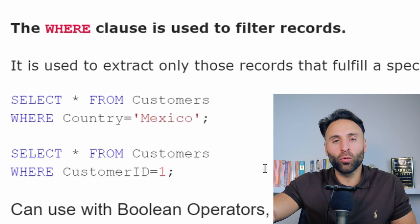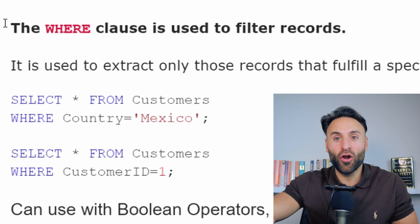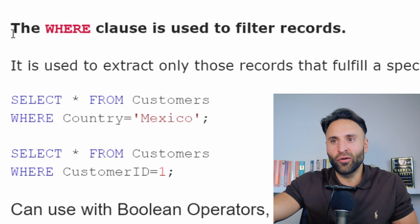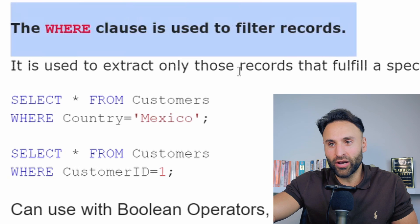The first function we're going to go over is called the WHERE clause. This is basically used to filter certain records. It's similar to an if statement if you've looked at other types of code, but basically the WHERE clause is used to filter records.